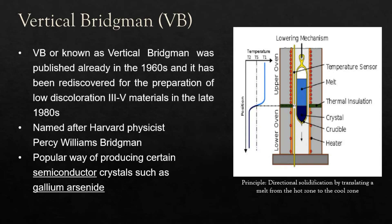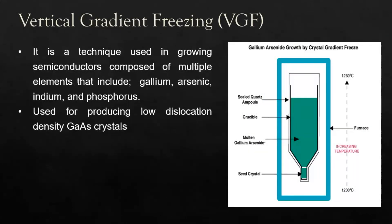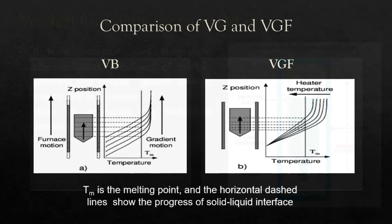Next is VGF. VGF is a technique used for growing semiconductors composed of multiple elements including gallium, arsenic, indium, and phosphorus. It is used for producing low dislocation density GaAs crystals. The principle and application areas for VB and VGF are basically similar. The key difference is that the VGF method eliminates the crystal-descending carriage mechanism and rotating mechanism, and instead uses a computer to precisely control the thermal field for slow cooling. This diagram shows the comparison between VB and VGF, where TM is the melting point and horizontal dashed lines show the progress of the solid-liquid interface.